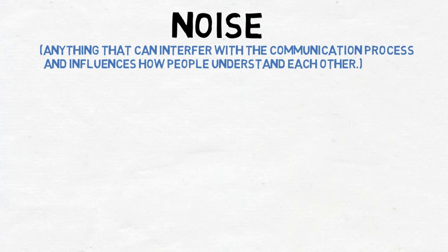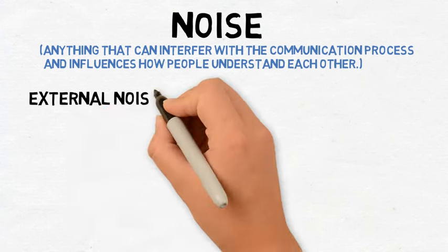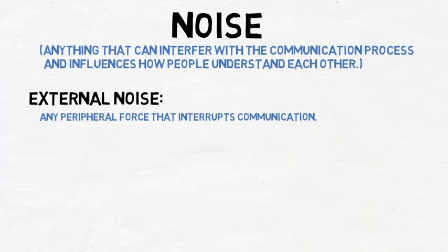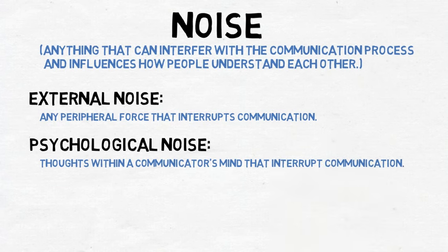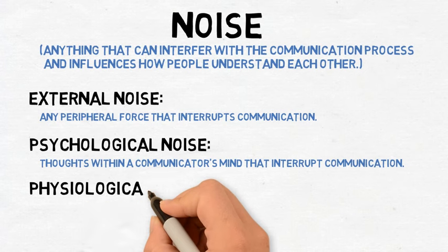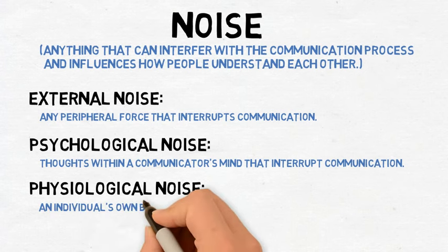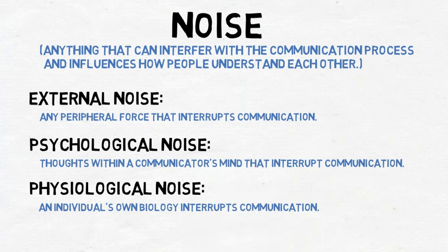Noise can be external, like music playing so loudly that people can't quite hear each other, but noise in the communication model doesn't only refer to sounds. External noise is any peripheral force that interrupts communication, including things like the light suddenly going out, someone interrupting a conversation, or a room being so hot it's difficult to concentrate. Noise can also be psychological — thoughts within a communicator's own mind can interrupt communication. There is also physiological noise, which has to do with an individual's biology: sometimes we are too tired to pay attention, can't clearly hear the message, or feel too ill to process all the information being communicated. All these forms of noise can interrupt information flow and influence what we do and don't perceive or understand during communication.